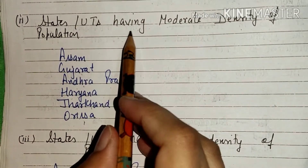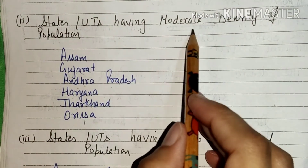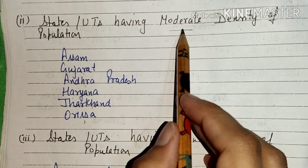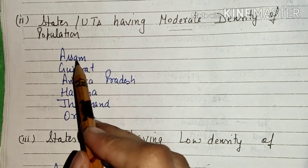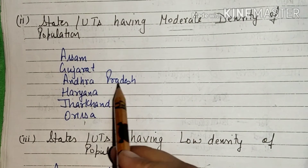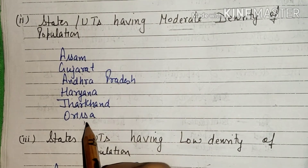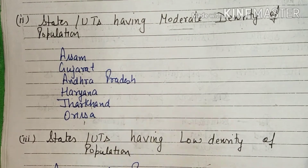States and Union Territories having moderate density of population: Assam, Gujarat, Andhra Pradesh, Haryana, Jharkhand, and Odisha are the states with moderate density of population.